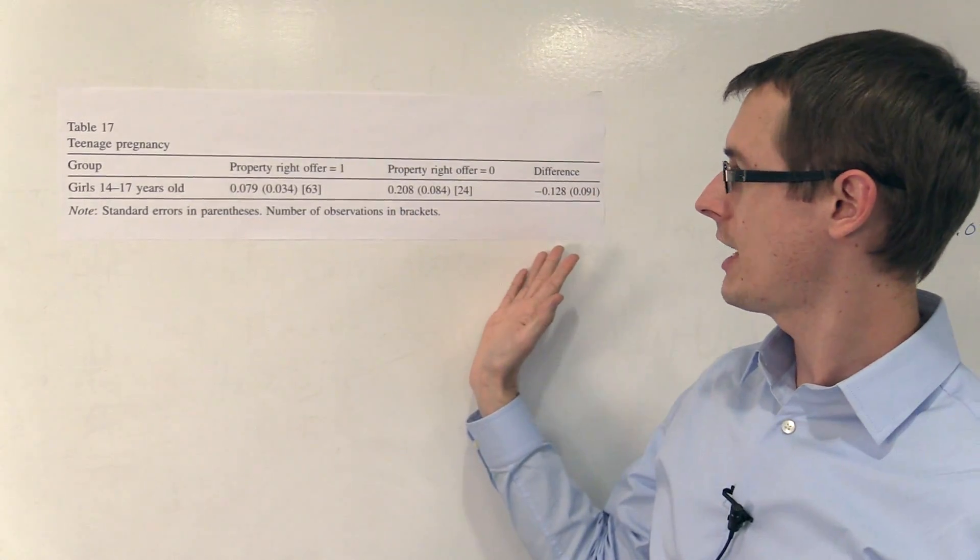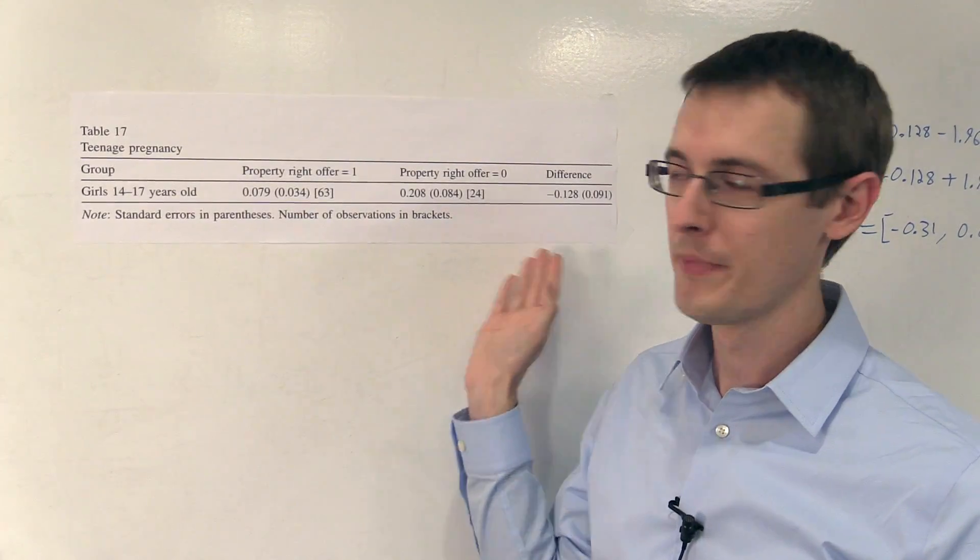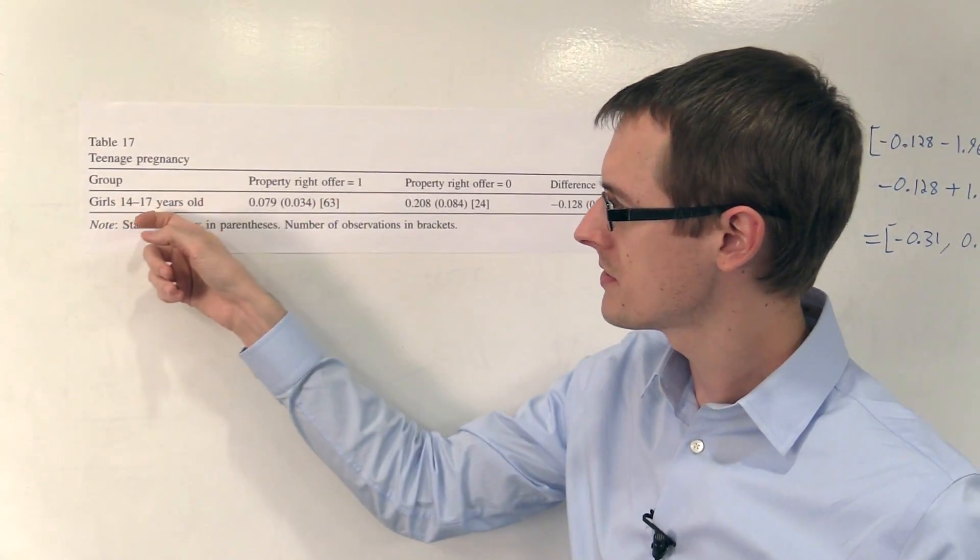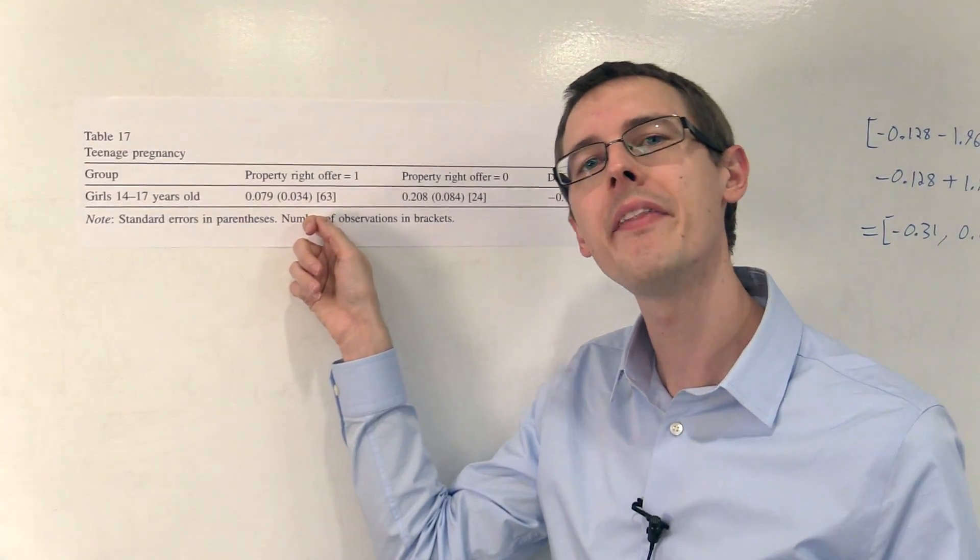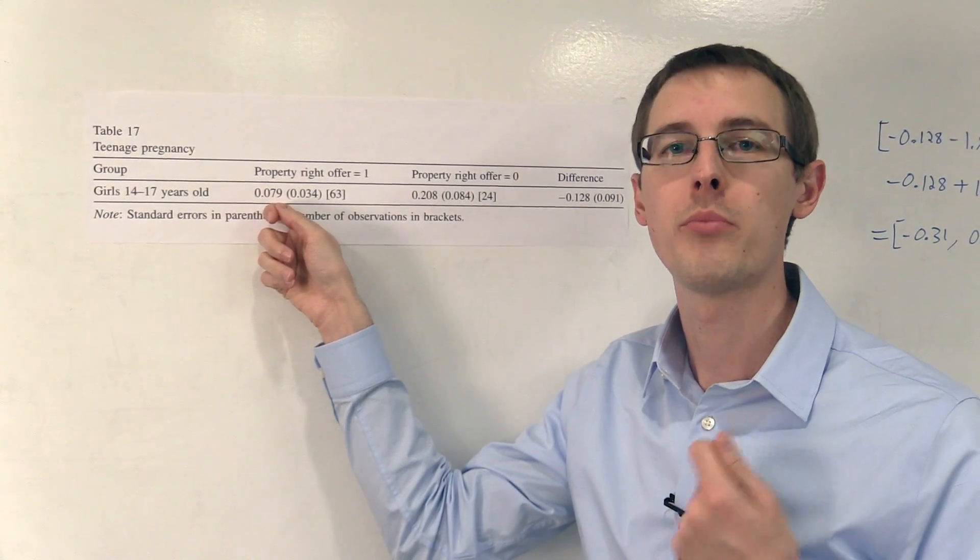So here this table shows you all the data. It's basically the simplest table you'll ever see. There's only one row, and in this column, we've got among girls who lived in households who had the option of getting property rights, about 7.9% of them were pregnant.